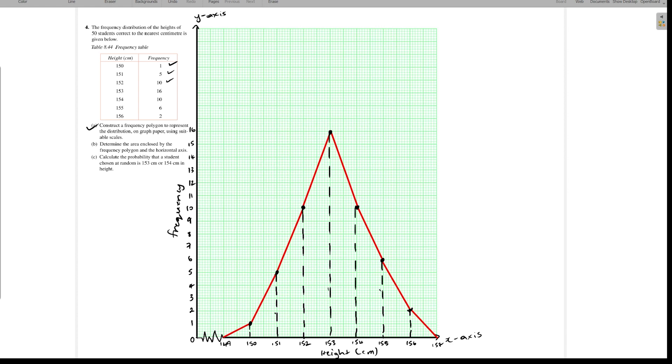Now the next part is to determine the area. That is where the broken lines come into play. If it asked us for the frequency polygon by itself, we would not use the broken lines. However, because it asks us for area, we would have to use the broken lines to separate the different sections.